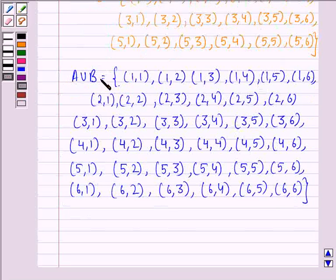So, this is the sample space for the event A union B. Now we see that this is equal to the sample space when two dice are thrown because here we have all the possibilities that we get whenever two dice are thrown.